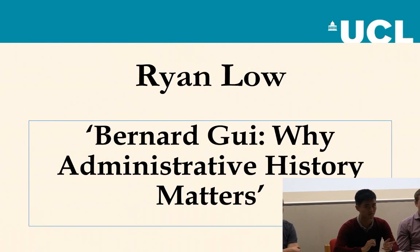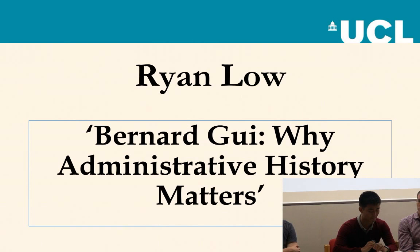Bernard was an administrator who understood how to guide institutions through the problems they inevitably faced. He knew how systems of power had worked or had not worked before, which policies succeeded and which failed. The image of Bernard I want to leave with you today is an imagined meeting between Bernard and, let's say, the prior of the convent of Limoges, the bishop of Limoges, the Viscount, maybe a royal or papal official. It's in these moments that we most vividly can understand the power of administrative history and the values that guided institutions in their decision-making. That type of administrative history was the difference between being listened to and being ignored.